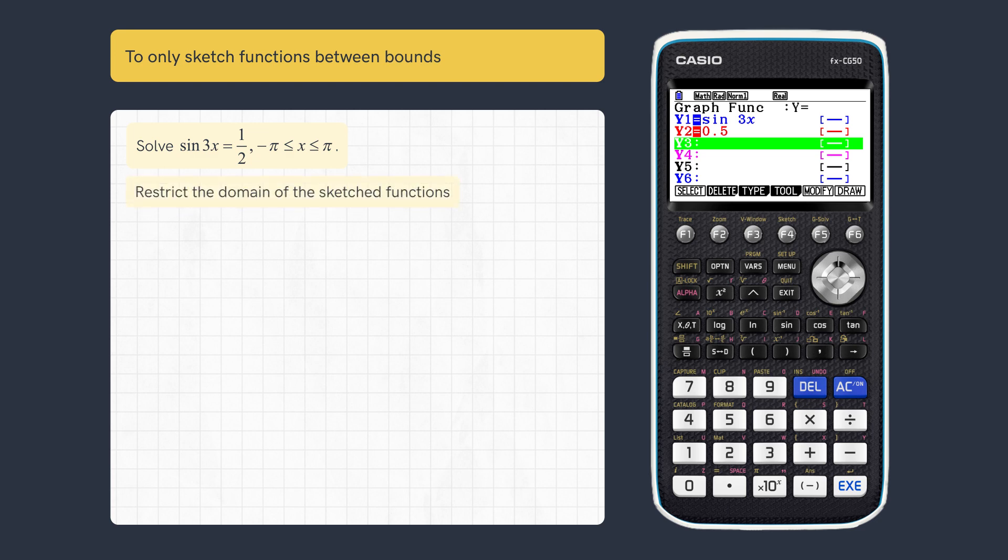highlight Y1 and scroll left. Enter a comma and open a square bracket.